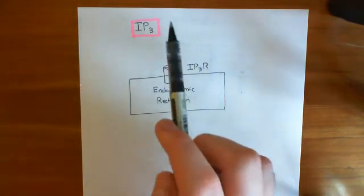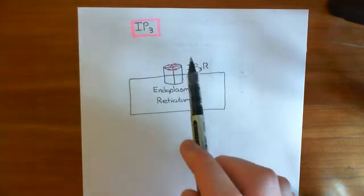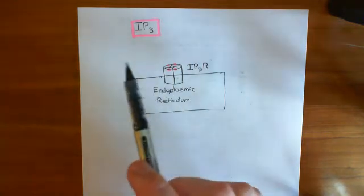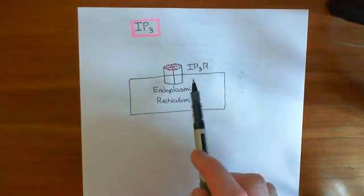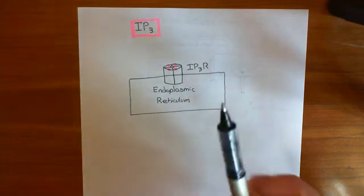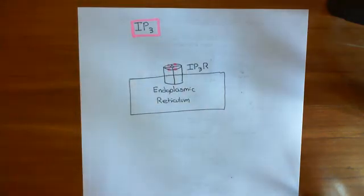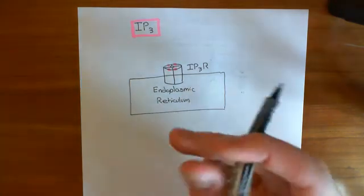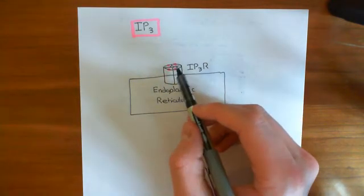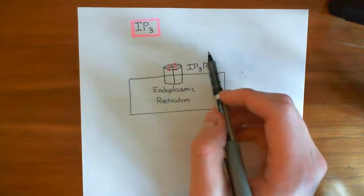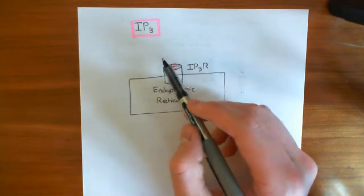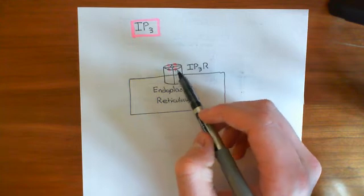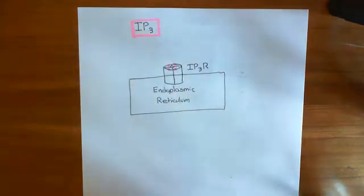But if the granule cell is actively stimulating the Purkinje cell dendritic spine and a climbing fibre fires, then the climbing fibre is going to provide the calcium that leads to the opening of this IP3 receptor. When they both are there together, that's going to lead to calcium release from the IP3 receptor, and that calcium release is going to cause long-term depression. So the IP3 receptor acts as a coincidence detector: the granule cell provides the IP3, and the climbing fibre provides the calcium — together they open the IP3 receptor and release calcium, causing long-term depression.